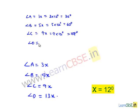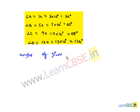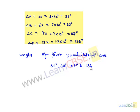Angle D = 13x = 13 × 12 = 156 degrees. So finally, the angles of the given quadrilateral are 36 degrees, 60 degrees, 108 degrees, and 156 degrees.